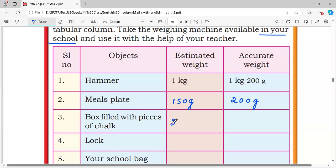Box filled with a piece of chalk, 200 grams. Accurate weight is 250 grams.